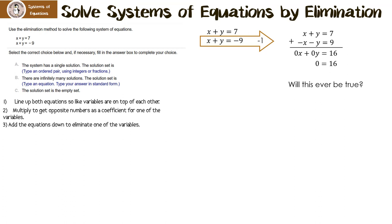So let's look at our possible solutions. It's not A, the system has a single solution, because we didn't get x or y by itself. It can't be B, infinitely many solutions, because 0 equals 16 is not true. That means our answer is C: the solution set is the empty set. In reality, these two lines are parallel — they have the same slope but not the same y-intercept.